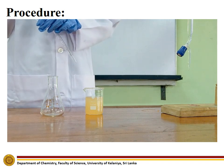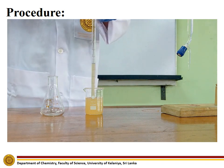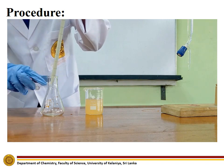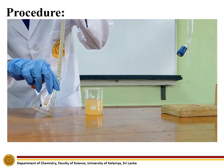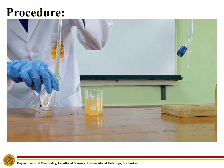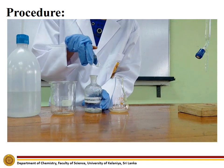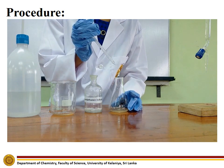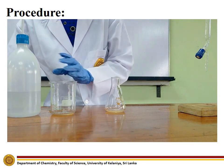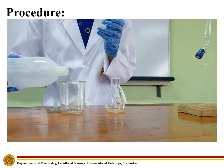Using a well-washed pipette, transfer 5 ml of vinegar to the titration flask. Next, add a few drops of the phenolphthalein indicator. Also add about 10 ml of distilled water in order to dilute the natural color of the commercially available vinegar.